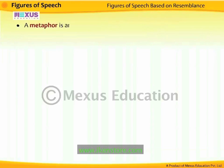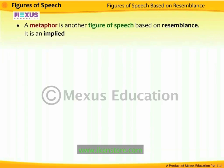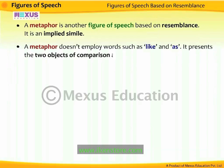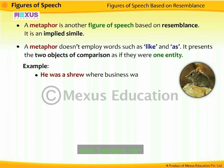A metaphor is another figure of speech based on resemblance. It is an implied simile. A metaphor doesn't employ words such as 'like' and 'as.' It presents the two objects of comparison as if they were one entity. For example, 'he was a shrew where business was concerned.' The person's business sense is compared to a shrew, but this comparison is not directly made — it is implied.